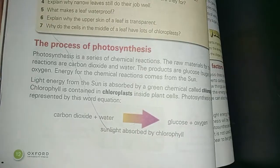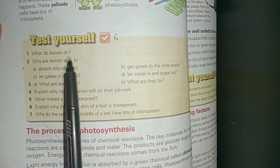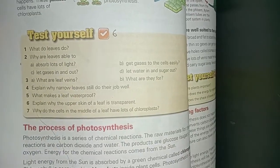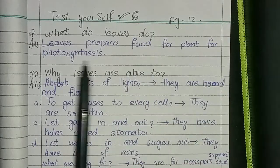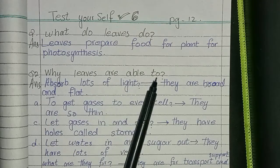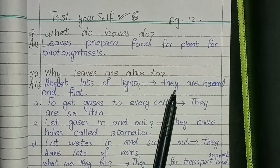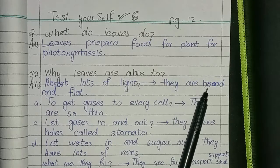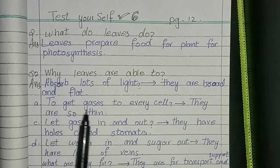Page 12, 6th Test Yourself. First question: What do leaves do? Leaves prepare food for the plant through photosynthesis. Second question: Why are leaves able to absorb lots of light? They are broad and flat to absorb maximum light.